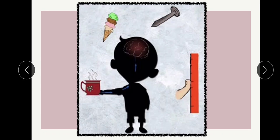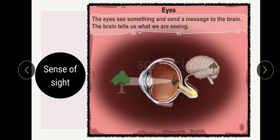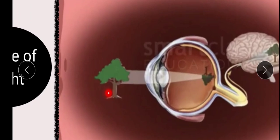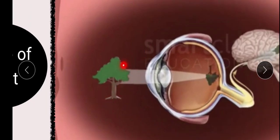Now let's see about each sense organ. The first is the sense of sight, which involves the sense organ eyes. The eye sees something and sends a message to the brain, and the brain tells us what we are seeing. We see different objects with different colors, sizes, and shapes. We cannot see anything in the dark - we can only see things with light. We need light to fall on objects for us to see. In this picture, you can see a tree and a light ray falling on it.